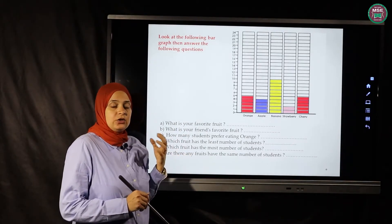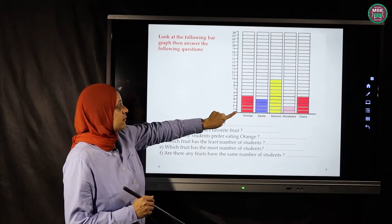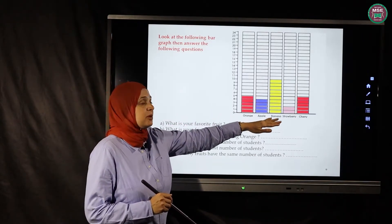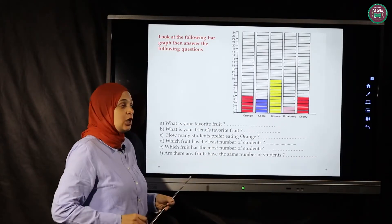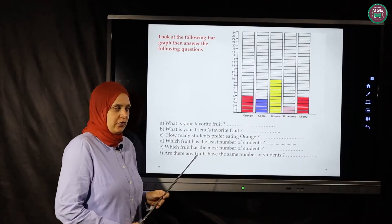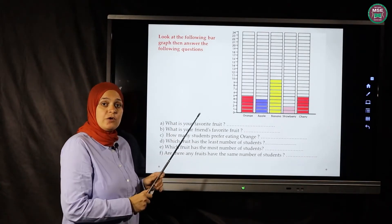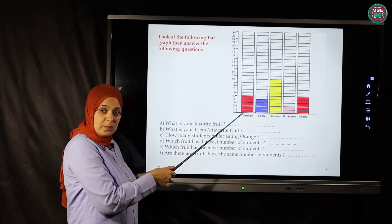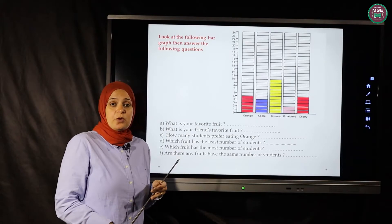On the horizontal line we have rows, and the rows go side by side — they lay beside each other. On the vertical line we have columns, and the columns go up and down.